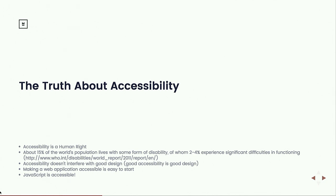What are some things we do know for sure about accessibility? Number one, it's a human right — many countries have ratified the UN's Charter on the Rights of Persons with Disabilities. About 15% of the world's population lives with some form of disability. There's still a significant proportion in Europe, North America, and elsewhere. And I want to drive this home: accessibility does not interfere with good design. Accessibility is essential for good design. If you're a designer and think I'm wrong about that, I'd be happy to have a conversation with you afterward.